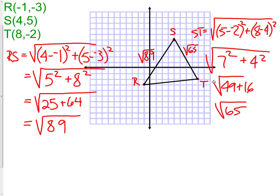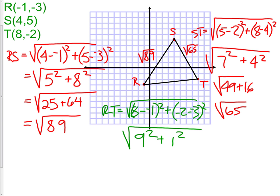Our last pair of sides would be R to T. We do the exact same thing one more time. We take the (8-(-1))² + (-2-(-3))². We will have 9² + 1², which would be the square root of 82.